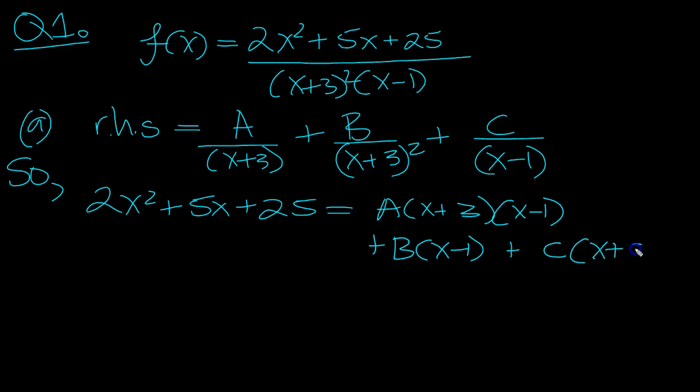X plus 3 squared. So put in X equals 1. 2, 7, 32. These go 16C. C is 2 then.